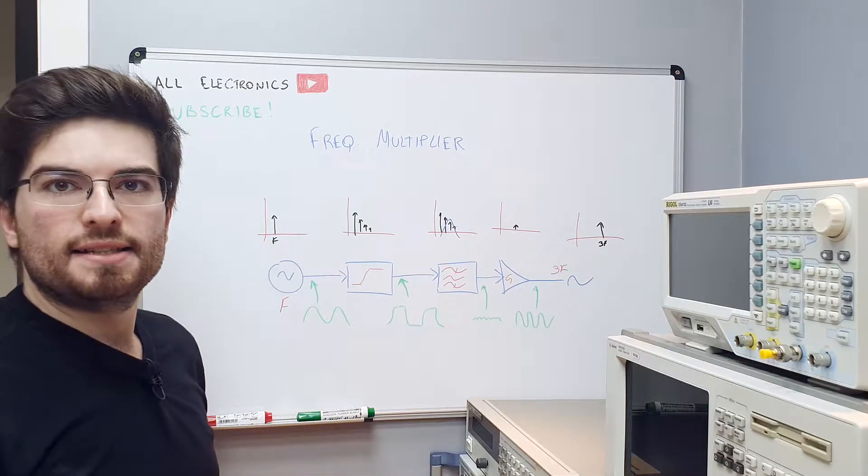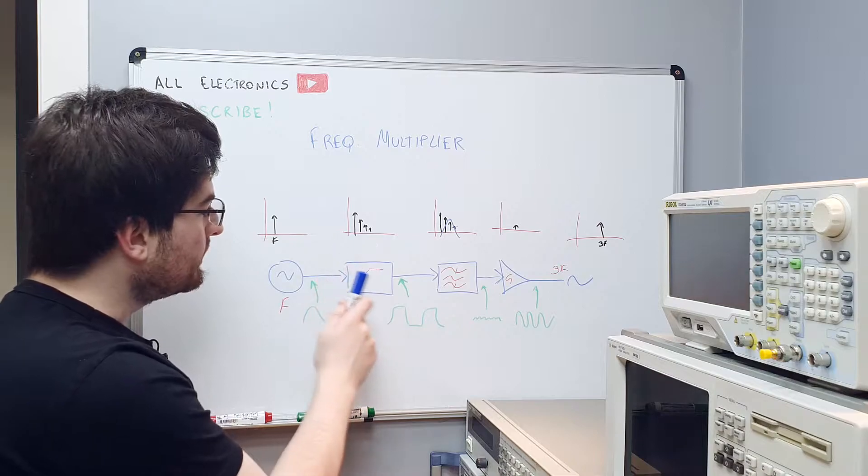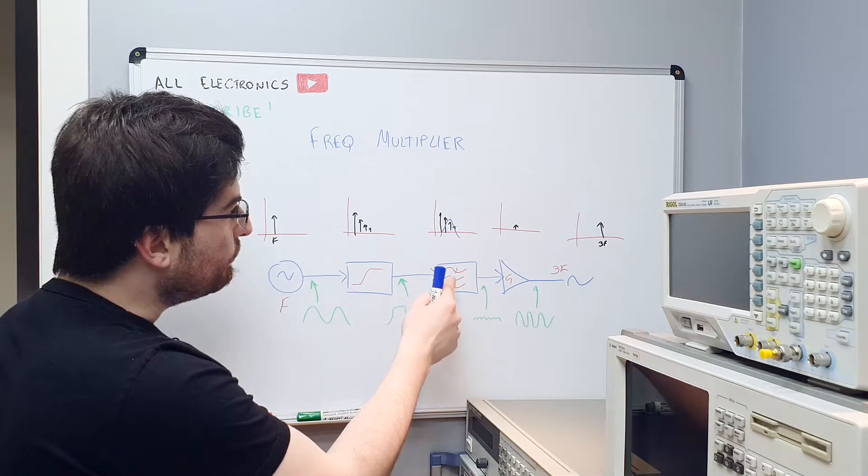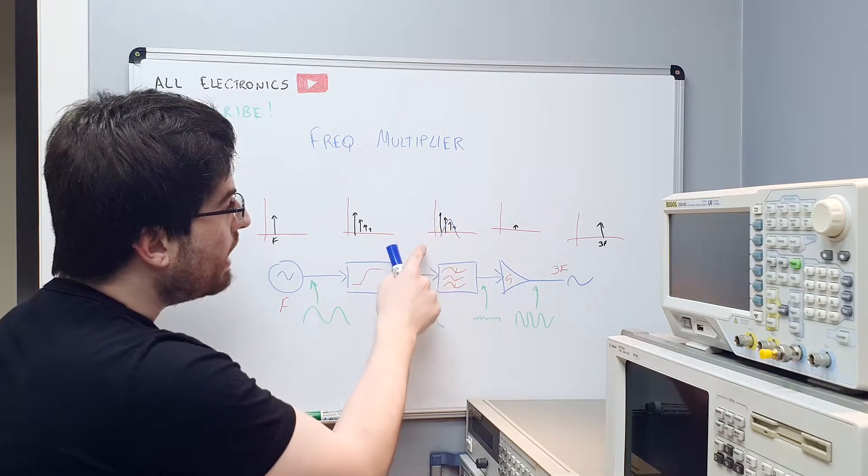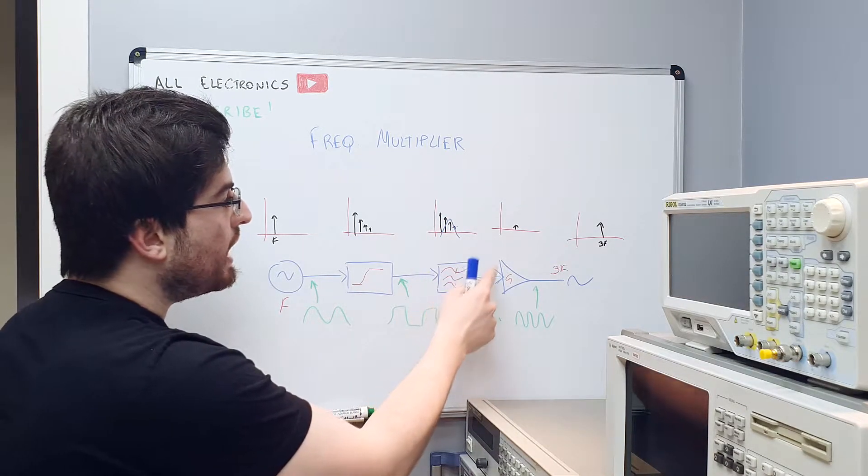Here we can see and understand the system using the spectrum of the signal in each step. The input is a sinusoidal signal, a perfect sinusoidal signal. Here on the clipping stage you have all the harmonics of the signal that's generated by the harmonic distortion of this non-linear circuit here. The bandpass filter will only filter the signal we're going to have on the output, so here we want to use the third harmonic of the signal. On the output of the filter we have a very low signal with three times the frequency and after the amplifier we can make up the gain of the signal to have a useful signal on the output.